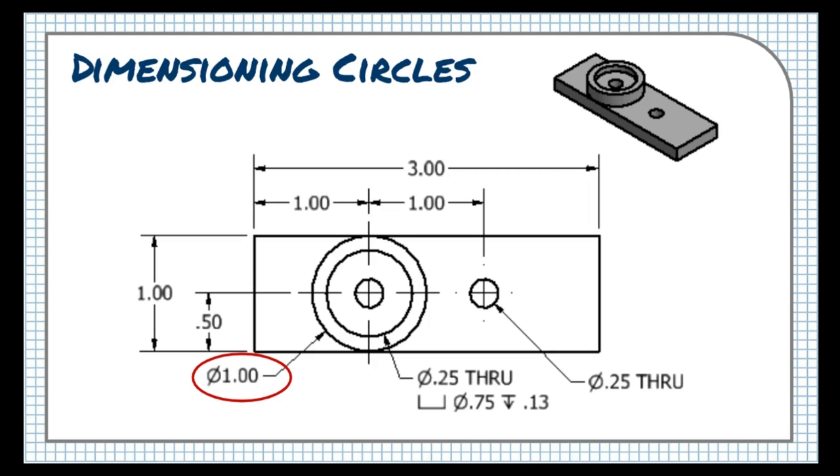While this note tells the reader the size of the circle, the center of the circle also needs dimensions that give its position relative to other edges of the object, usually one in the height direction, and one in the width direction.